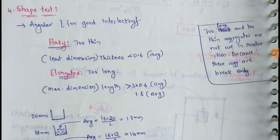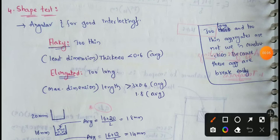Next topic: Aggregate Shape Test. In this video, we will discuss the flakiness index and elongation index.